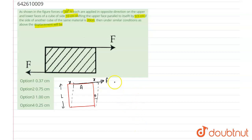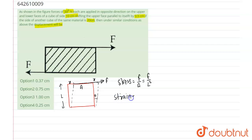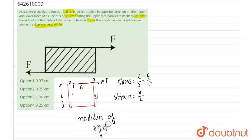If we apply the force F, in that case stress will be equal to force upon area, and in the case of a cube we can put that as l squared. The strain will be that angle, which is x upon l. So the modulus of rigidity G will be equal to force upon l squared, multiplied by l upon x. So we will get the relation for G.